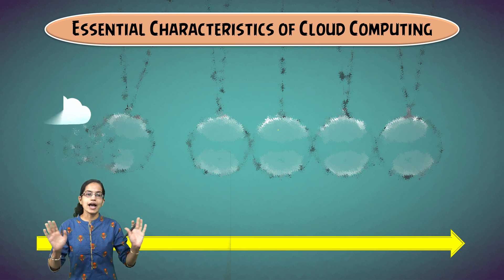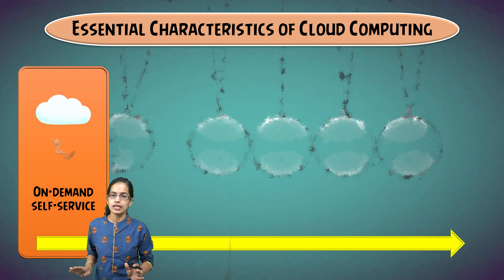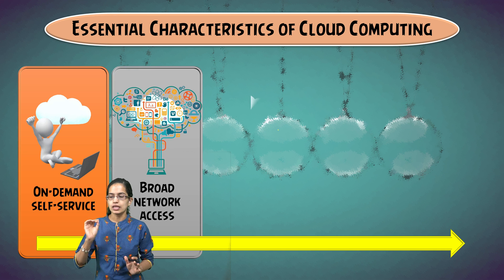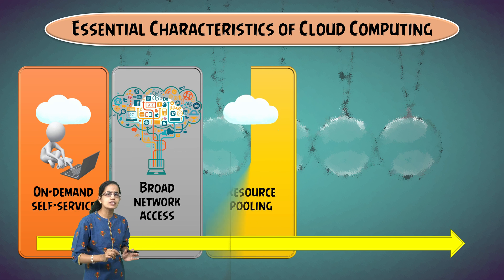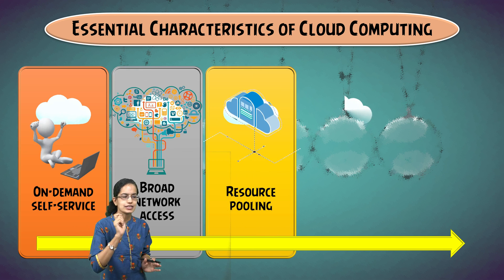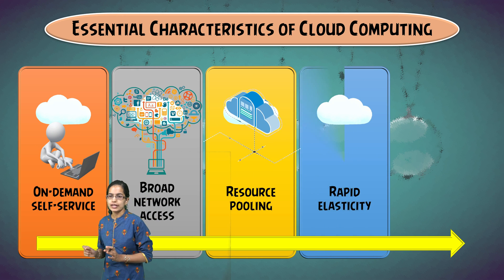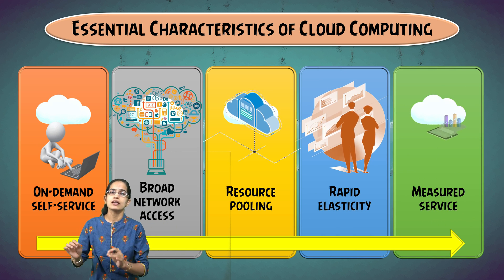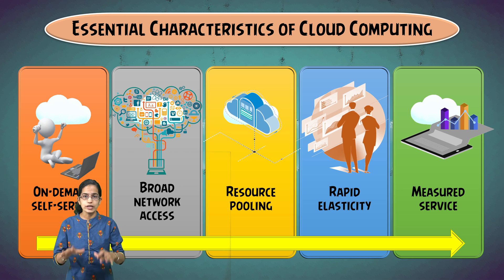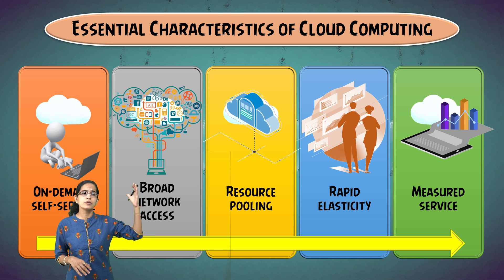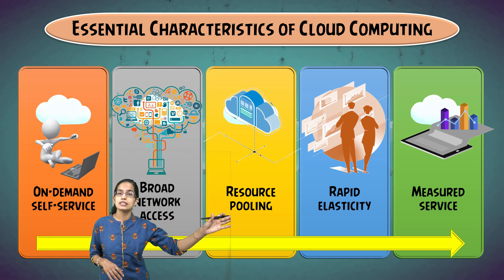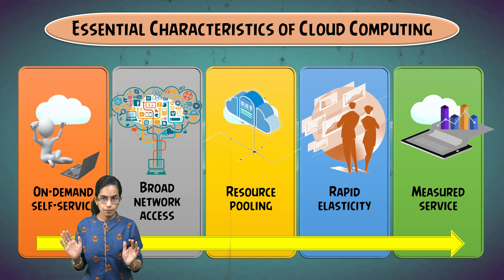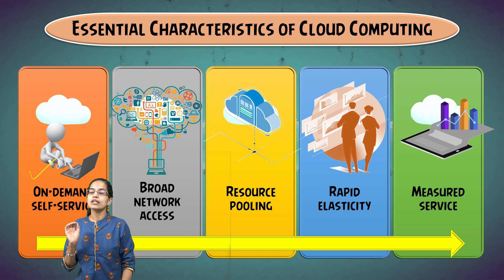There are five important characteristics for cloud computing. The first characteristic is on-demand self-service. That means whenever I require the service, I get it. It is fully managed by the provider and the user is able to use the resource whenever and wherever required — whether at 12 midnight in India or in the United States, wherever across the globe, it's totally fine.